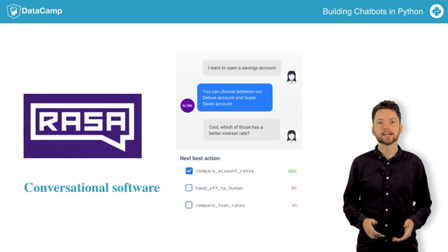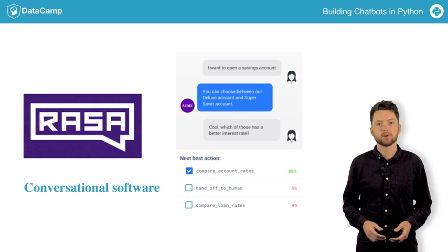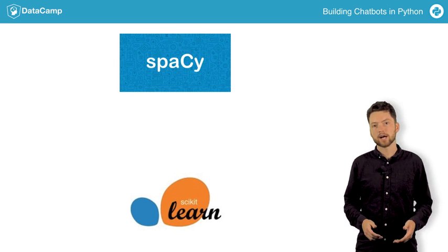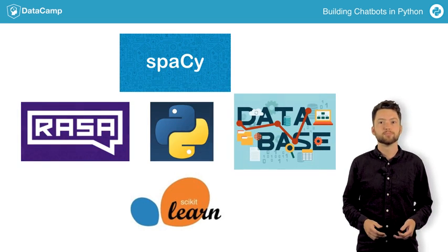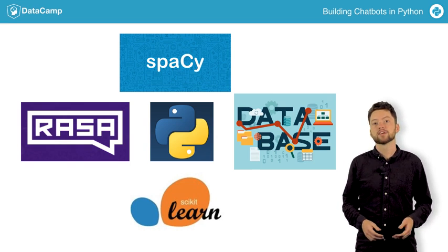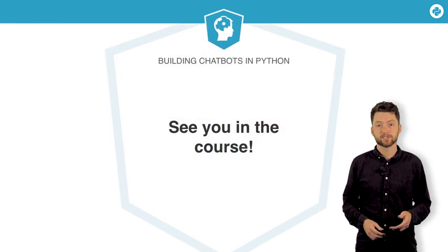Conversational software includes anything where natural language can be used to control a system. It's an incredibly powerful idea, which has been around for a long time. In the course, you will learn how to use scikit-learn, spaCy, Raza, SQL databases, and Python data structures to build chatbots and virtual assistants, which are fun as well as useful. And you will learn to use a number of machine learning techniques along the way. See you in the course.